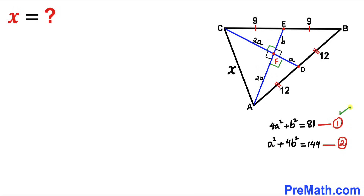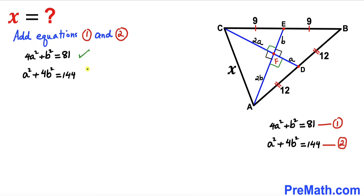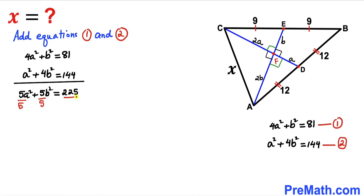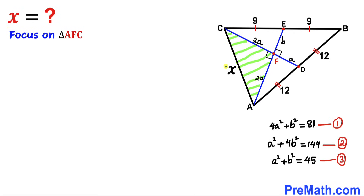We now have Equations 1 and 2, and we're going to add them together. Adding 4a² + b² = 81 and a² + 4b² = 144 gives us 5a² + 5b² = 225. This equation is divisible by 5 across the board, so dividing through by 5 gives us a² + b² = 45. Let's call this Equation 3.